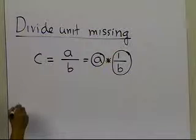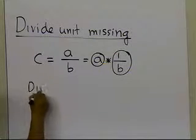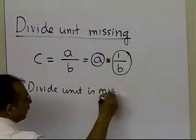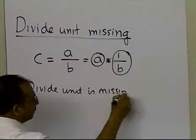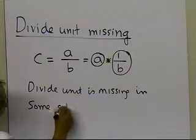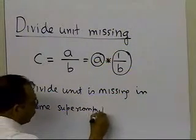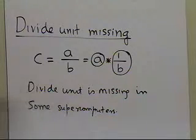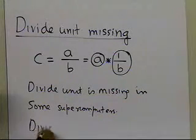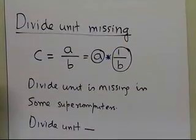In some supercomputers, you'll find out that the divide unit is missing. Now, why is that the case? It is as follows: the divide unit is the unit which takes the most amount of time when you are trying to divide.